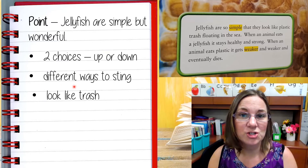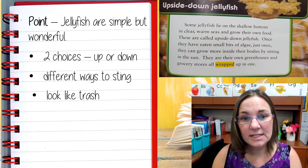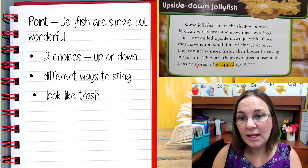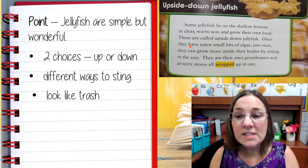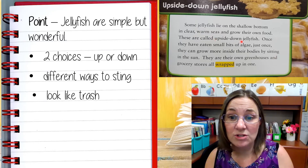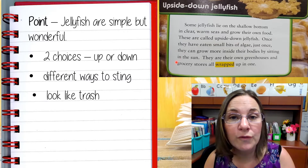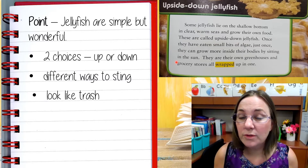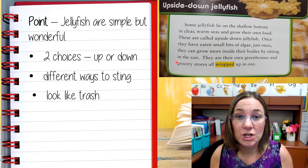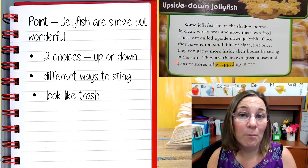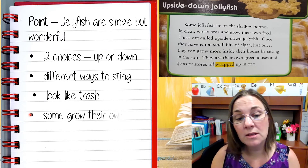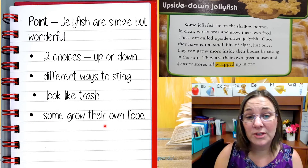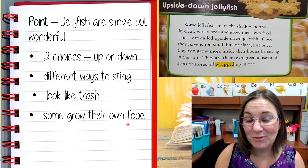Let's take a look at this page. Is there anything here that proves they're simple but wonderful? On this page we were reading about upside-down jellyfish that make their own food. Can you imagine an animal that makes its own food? It doesn't have to hunt, doesn't have to search — it just makes its own food. I think that makes it pretty wonderful. So I want to include that detail because that would be a reason the author used to support the idea that it's wonderful. Why is it wonderful? They grow their own food.